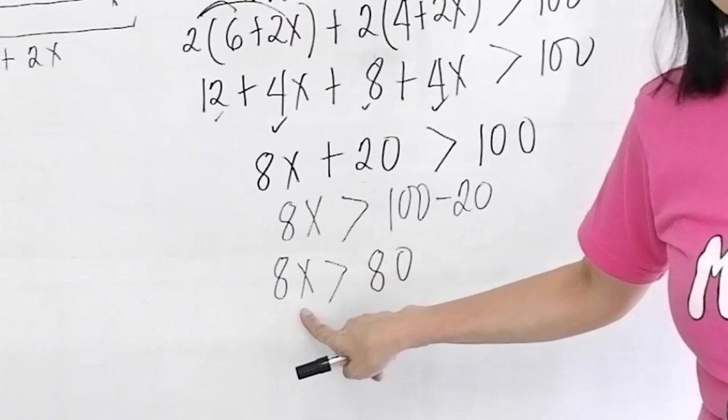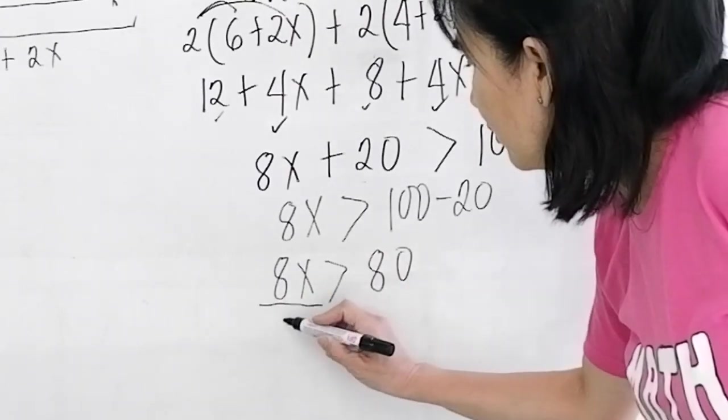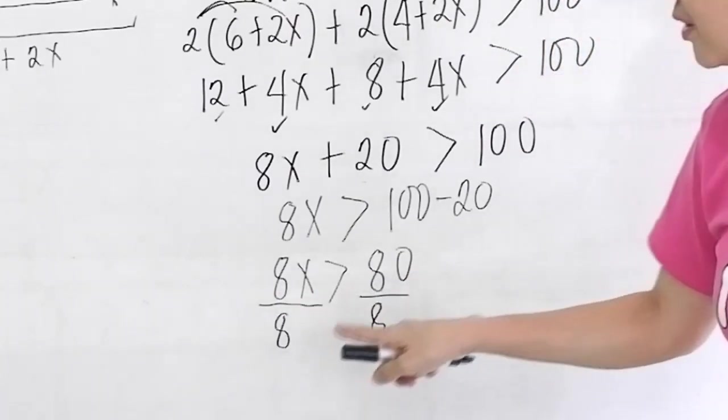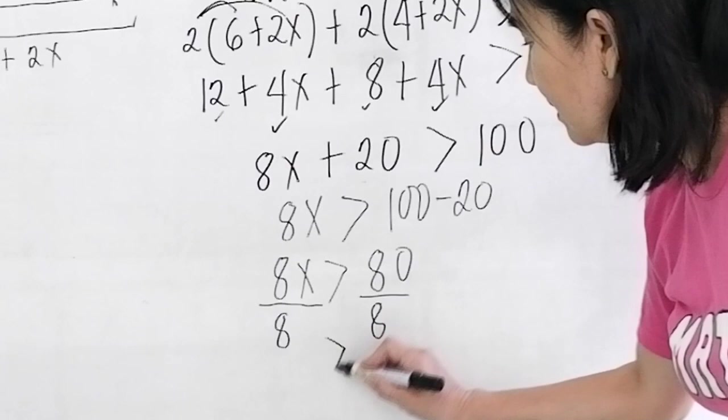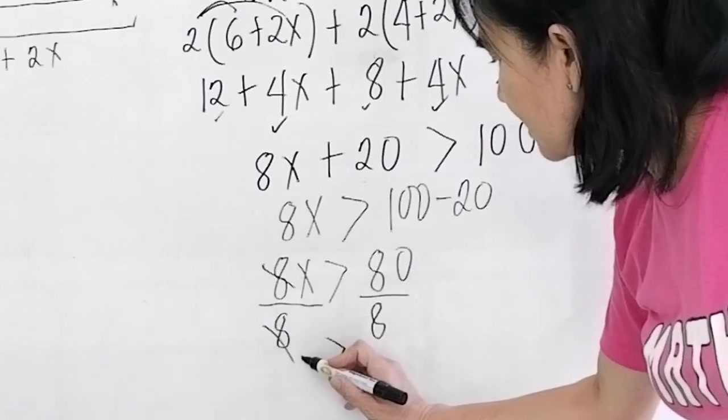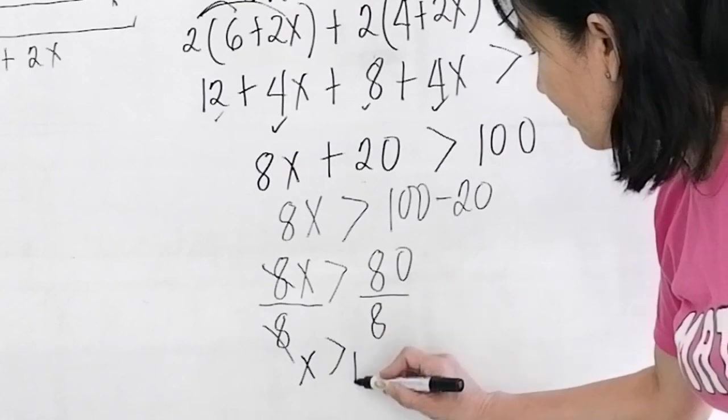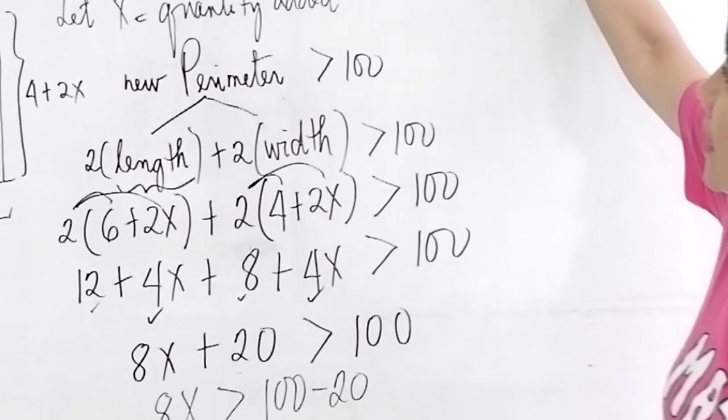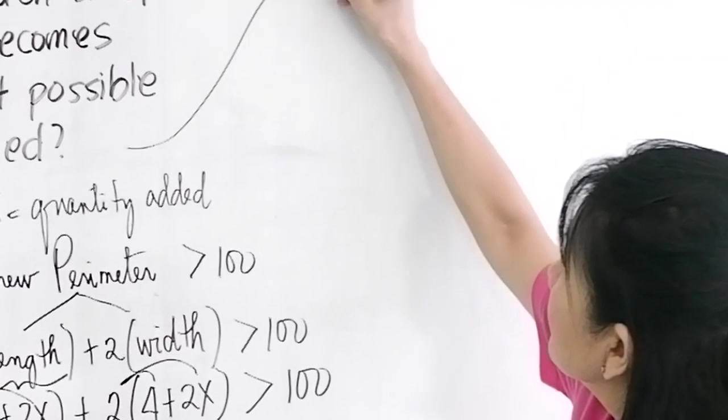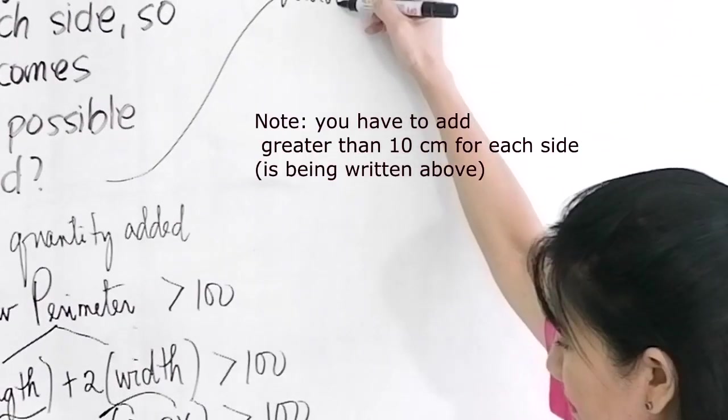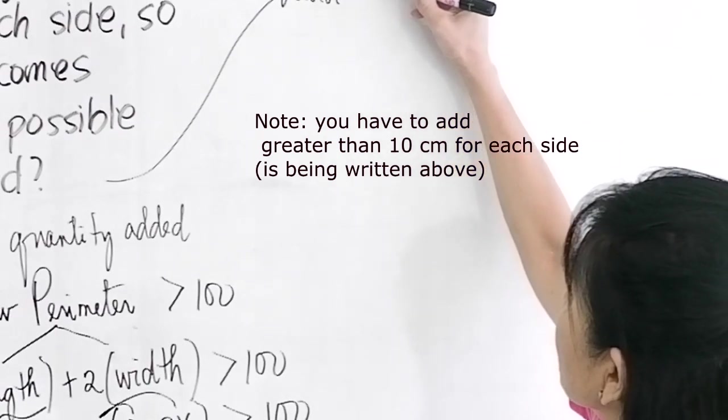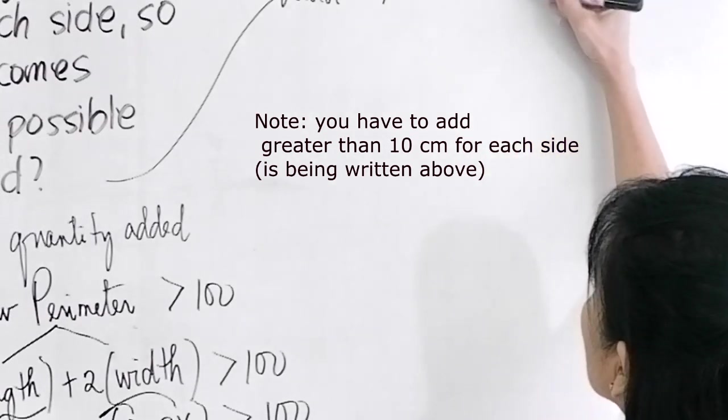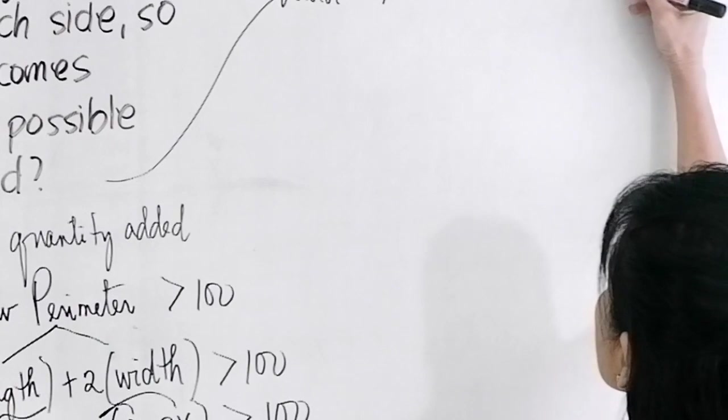Now how do we isolate x? Let's multiply by 1 over 8 or divide by 8 to both sides. We're dividing a positive number so you retain the inequality. Cancel this, so x is now greater than 80 divided by 8 is 10. That would mean we have to add greater than 10 cm to each side.